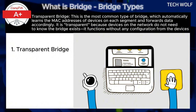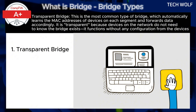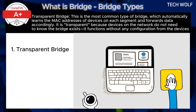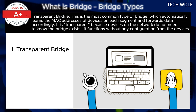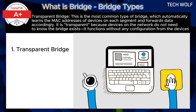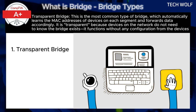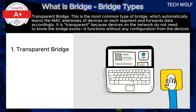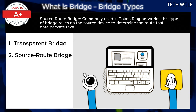There are three types of bridges. The first is the transparent bridge, the most common type, which automatically learns the MAC addresses of devices on each segment and forwards data accordingly. It is transparent because devices on the network don't need to know the bridge exists — it functions without any configuration from the devices.